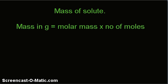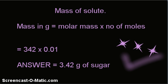The last step is to find the mass of solute. Mass in grams equals molar mass times number of moles. Plugging in the values, the answer is 3.42 grams of sugar to be dissolved.